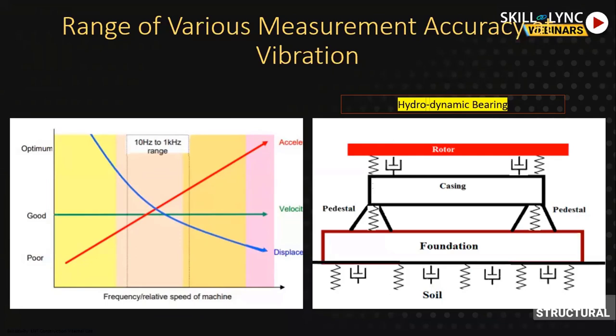There are three common regions — optimum, good, and poor — based on the frequency range or in terms of speed of the machine. We commonly model the system in terms of a spring-dashpot model. One important portion is the rotating mass and the hydrodynamic coupling. First of all, we need to ensure static safety — the foundation must be safe under static load, satisfying both bearing capacity and settlement criteria.